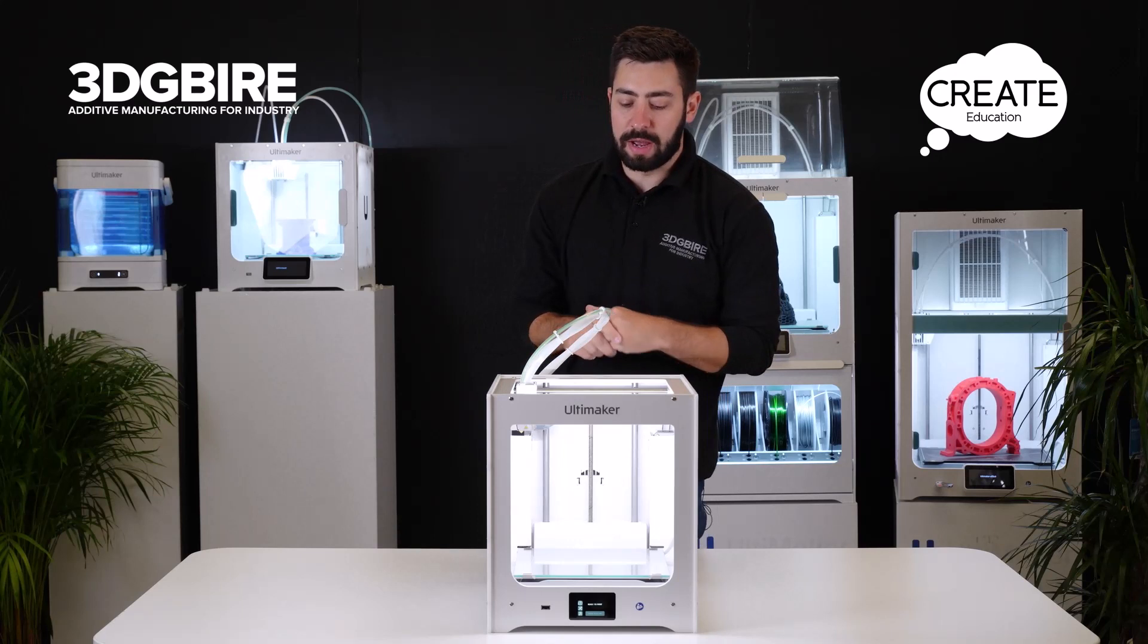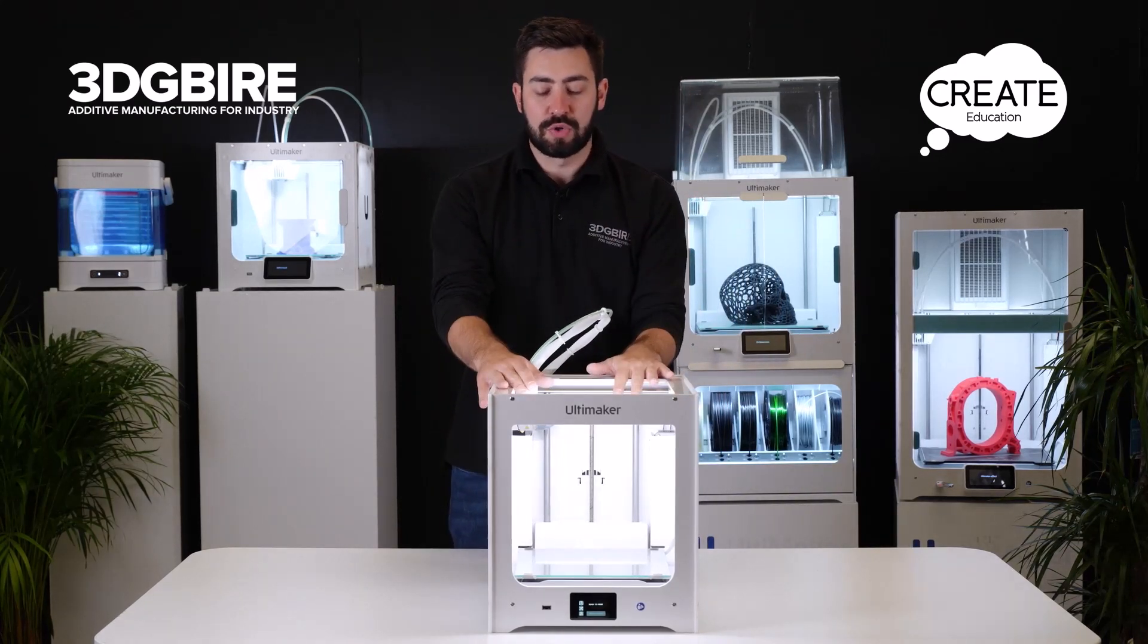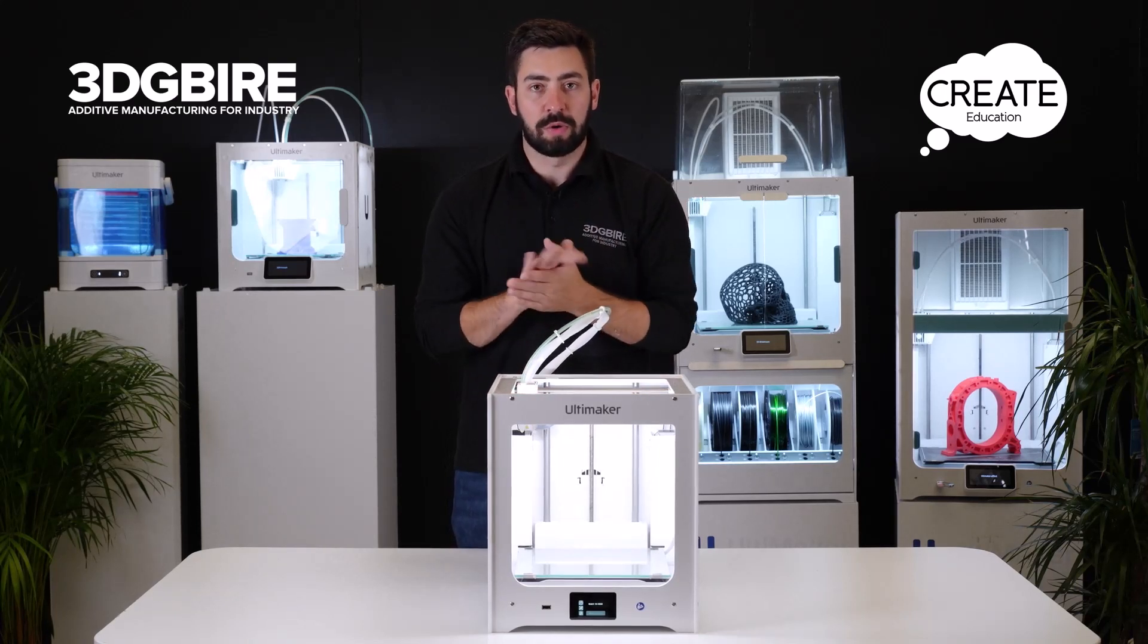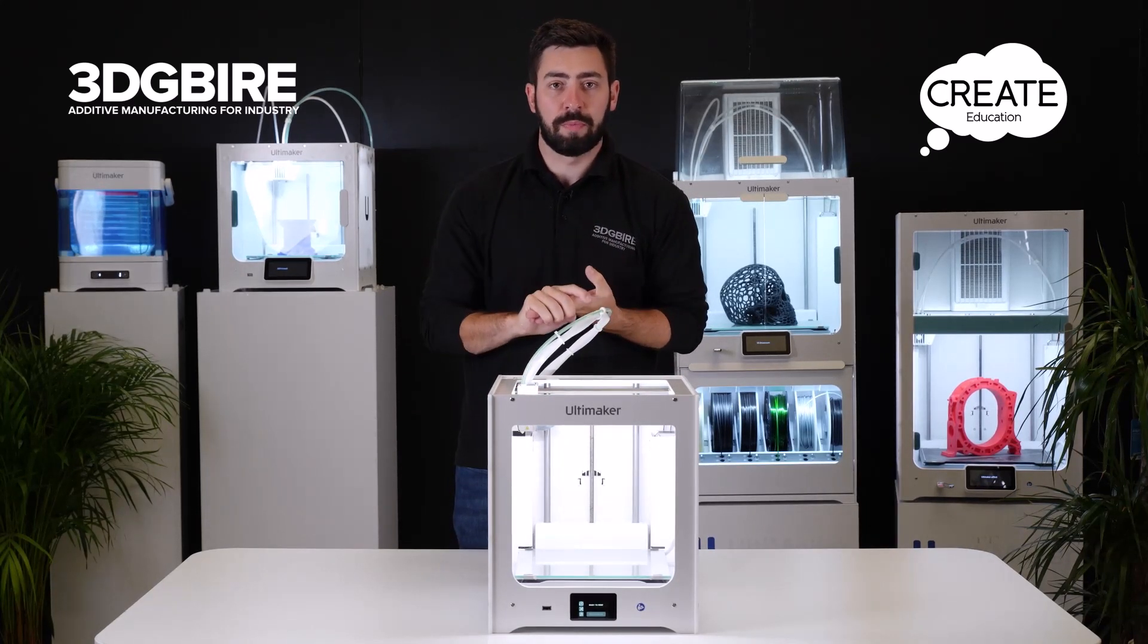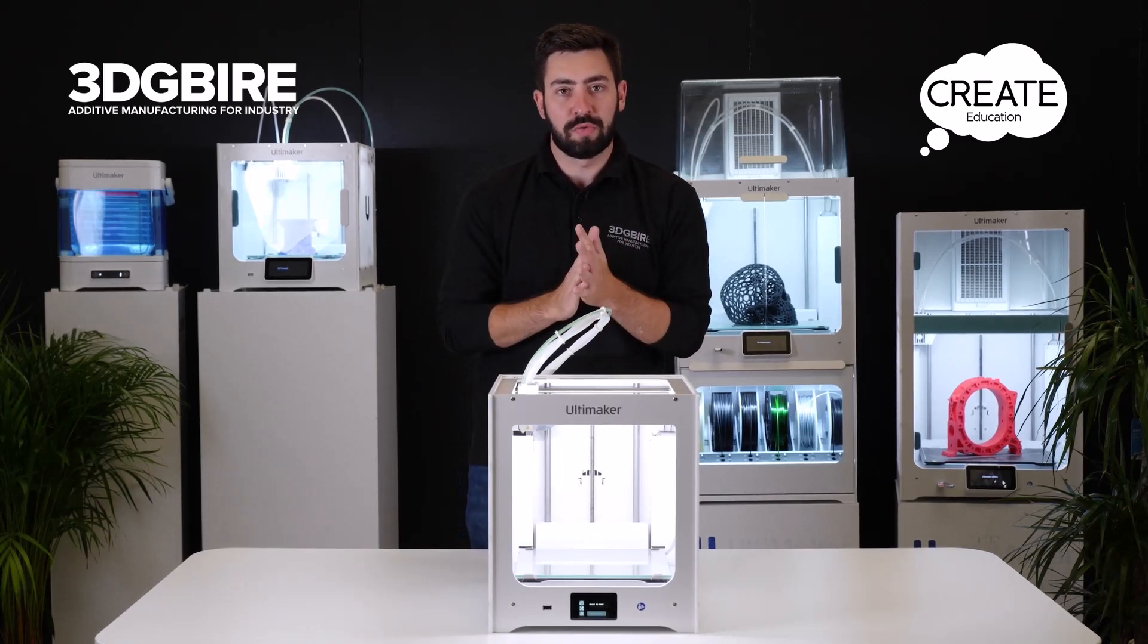The key areas that we want to be looking at are the inside of the machine, underneath the platform, around the gantry, and also the fans that are going to be operational every time the machine's turned on. Let's have a deeper dive and look at how we're going to clean each one of those different sections.